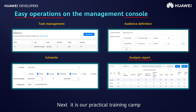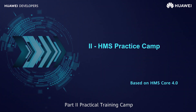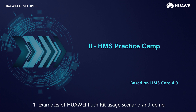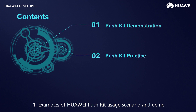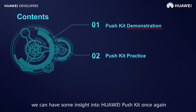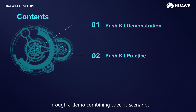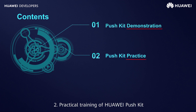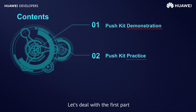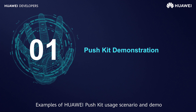Next is our practical training camp — Part 2. There are two parts: 1. Examples of Huawei PushKit usage scenarios and demo. Through specific scenarios, we can have some insight into Huawei PushKit once again, and through a demo combining specific scenarios, we will show you how to use it. 2. Practical training of Huawei PushKit — this is about the code that developers are most concerned about.